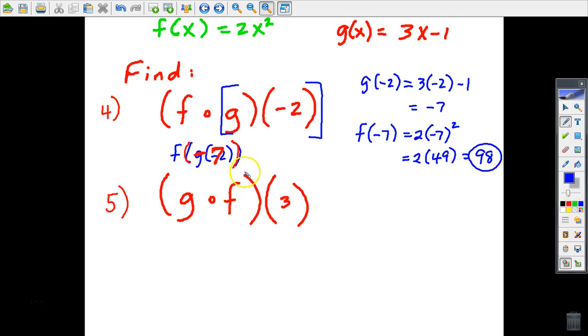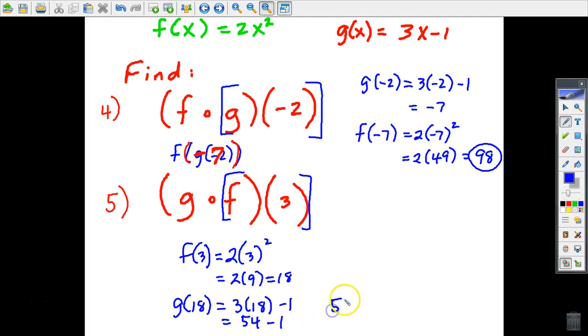Another example, same thing. Let's find out what F of 3 is. That's just replacing x in the F function with 3. Hopefully you see that that's 2 times 9, which is 18. And remember, the output from the first function, which we just came up with is 18, becomes the input for the second function. So now you just find G of 18 and you're going to have your answer. Replace x with 18 in the G function. 54 minus 1. Final answer is 53.